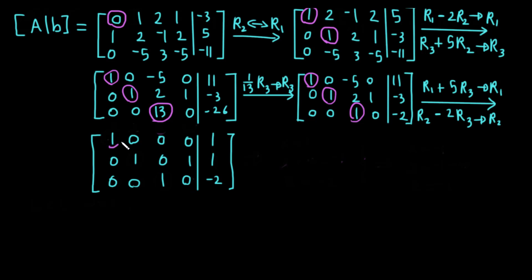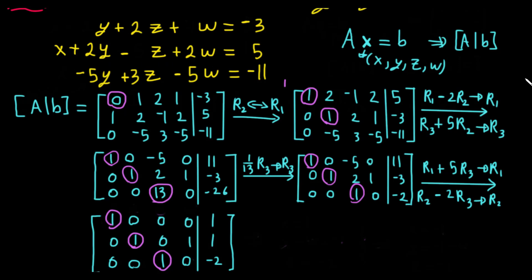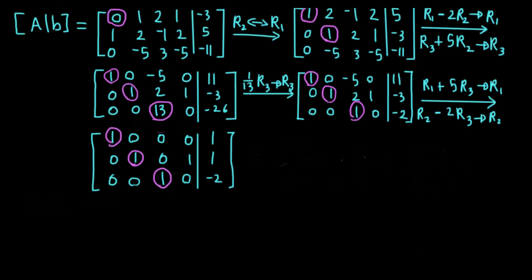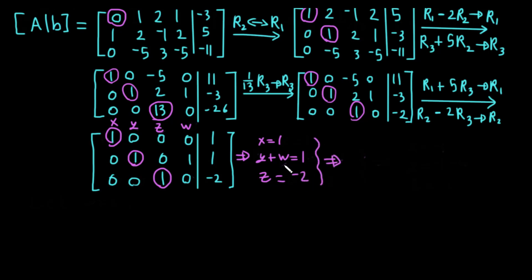Now we read off the solution. We have x, y, z, and w. From the reduced matrix: x = 1, y + w = 1 (because there are two unknowns in that equation), z = -2. We cannot solve uniquely for y and w since there are two unknowns — this means the system has infinitely many solutions.